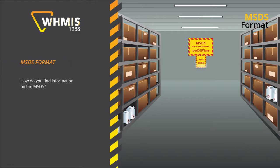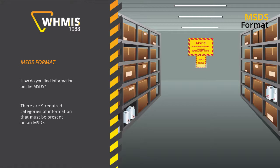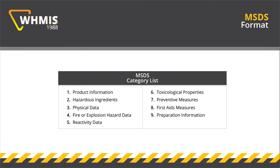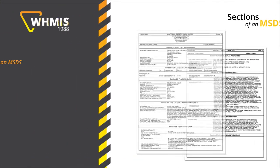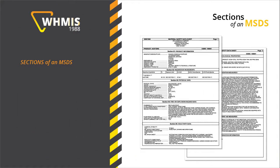How do you find information on the MSDS? There are nine required categories of information that must be present on an MSDS. Here is the list of sections. Let's work through the sections of an MSDS.